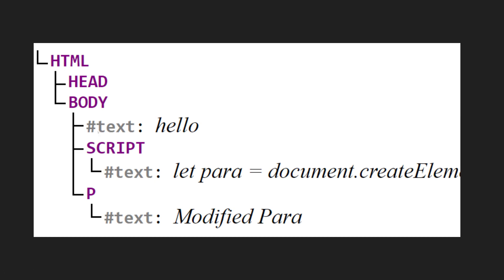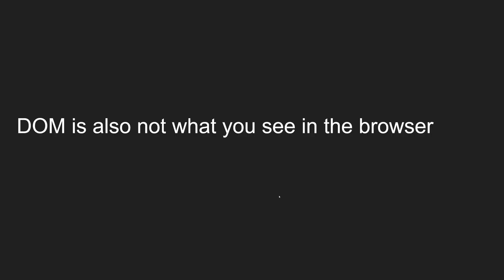Now the DOM will look like this — whereas the HTML document has html and the script, the DOM will have html, head, and a body. Inside the body you'll see the text 'Hello', the script element, and an extra paragraph that we haven't written in HTML. This paragraph was created through JavaScript, so JavaScript has modified the DOM, and this is not present in the HTML document.